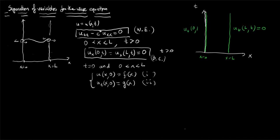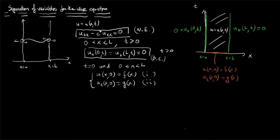We have the initial interval where u of x at t equals 0 is the given function f of x, and the time derivative at t equals 0 is the given function g of x. We are looking for a solution u of x and t in the region between the boundaries. The boundary and initial conditions imply compatibility conditions.